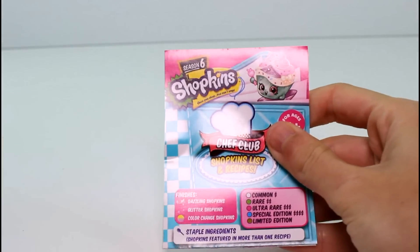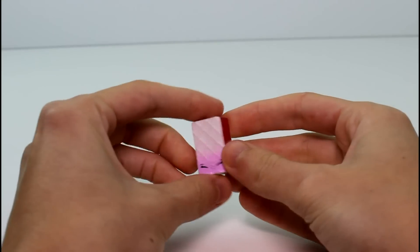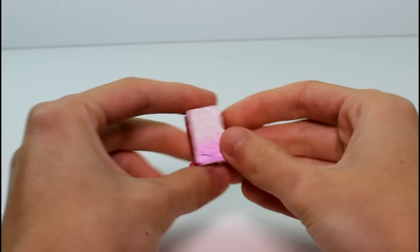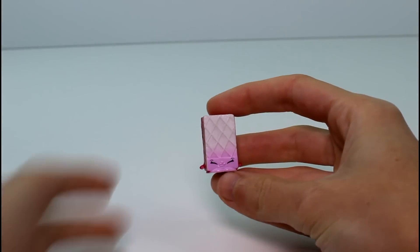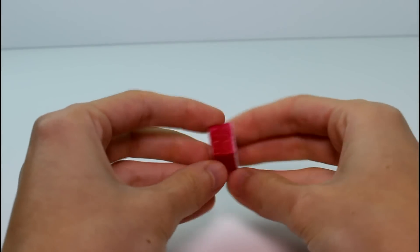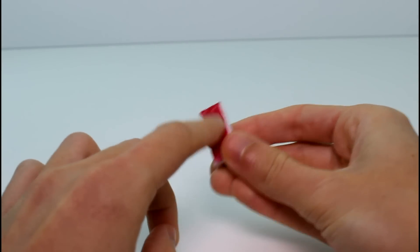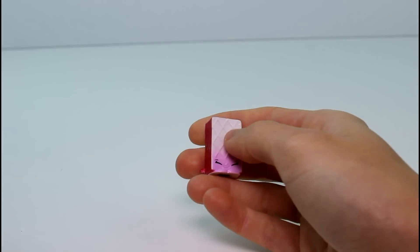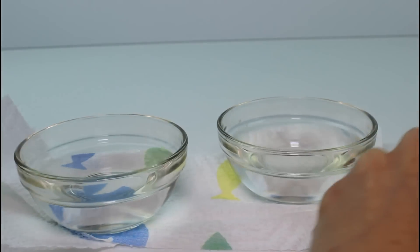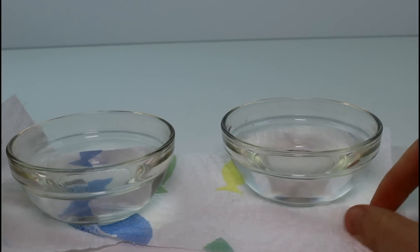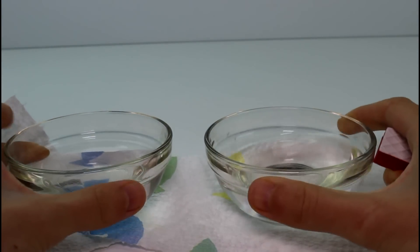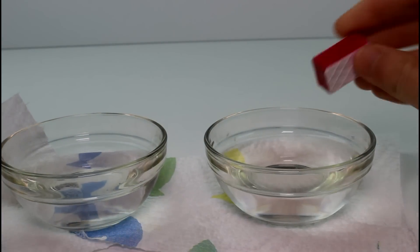Each pack comes with a checklist. But anyway, let's start with a color change shopkin. So we have Wanda Wafer here. She is so cute. Look at her little face. And I'm wondering what color, I think this part of her will change color, the middle part, maybe with warm water. So I brought in warm and cold water. I hope they're cold enough, I hope they're warm enough. I didn't have any ice ready so it's not ice water.